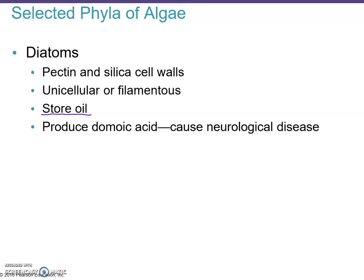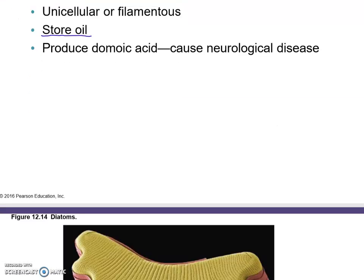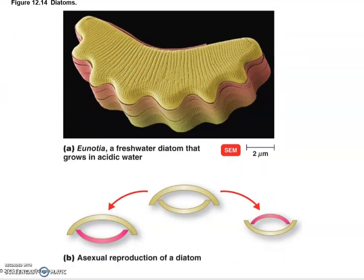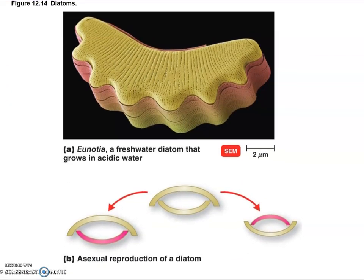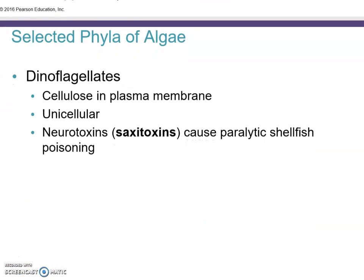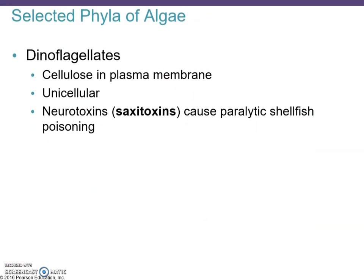Diatoms also produce domoic acid, which can cause neurological disease. Here is an example of a diatom — this one happens to grow in acidic water.